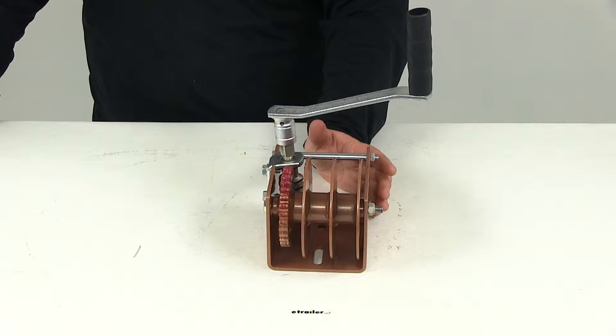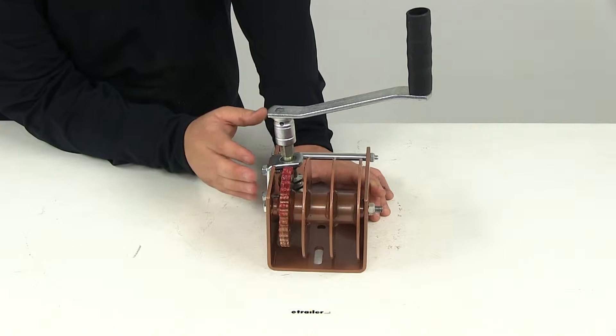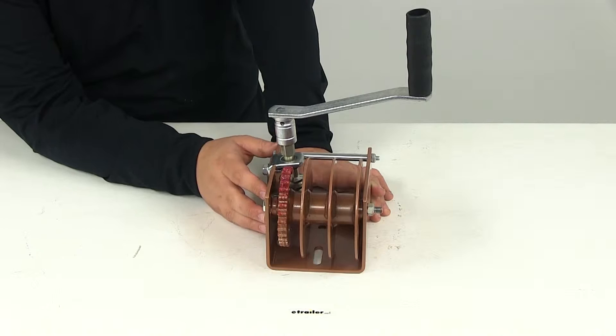Now this winch is going to have a capacity of 1,500 pounds. It's designed for safe controlled movement of loads. The winch is going to stop turning whenever cranking stops. There's no freewheel mode with this winch. There's no mechanism required to stop the gear movement and there's no minimum load required.